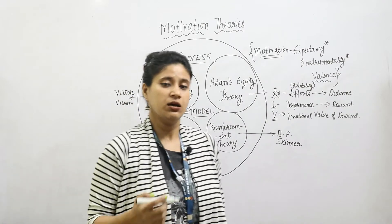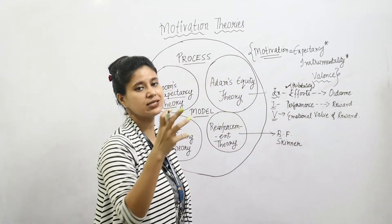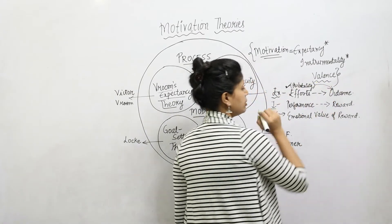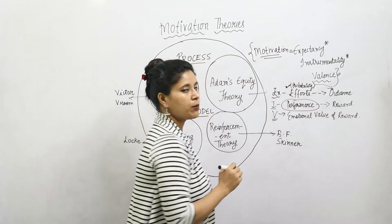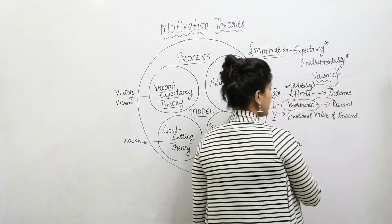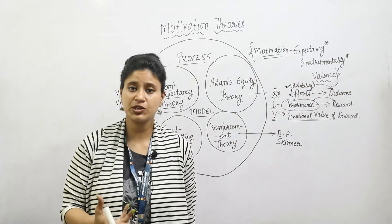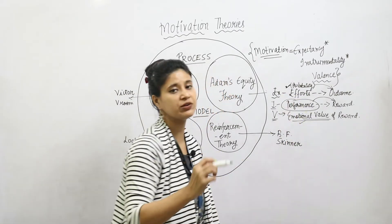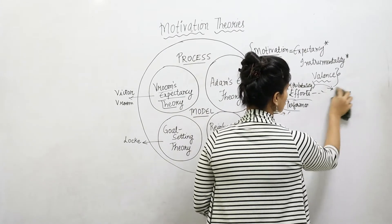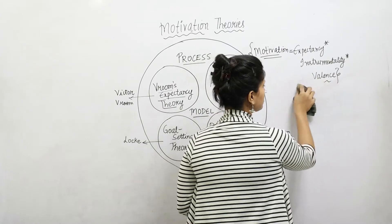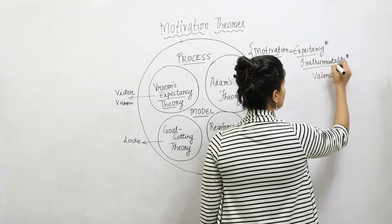Let's understand with an example. Your NTA UGC Net JRF exam is coming. What is the probability that if you keep putting in efforts, it will take you to the desired outcome of achieving the certification? Because you are putting your efforts and performance into it, it will lead to a reward. And Valence talks about the emotional value — maybe you want a settled life or have a need for achievement. Whatever emotional value is attached to that outcome is Valence. So do not forget: Motivation = Expectancy × Instrumentality × Valence.